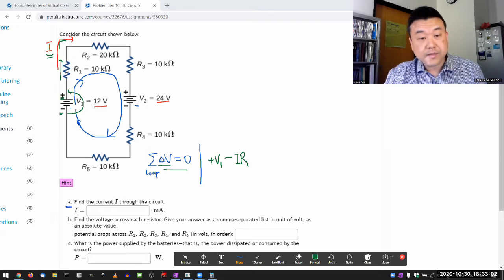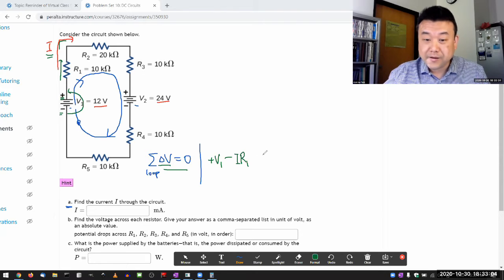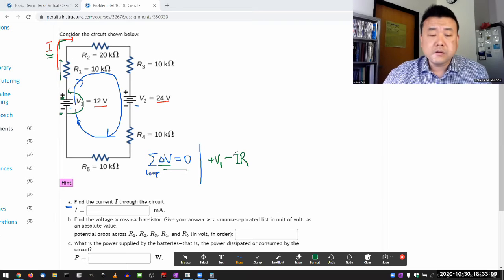So the only thing that matters here is the consistency. So I'm going with the current in the direction I labeled. And in the end, when I find the current to be negative, then the negative sign in current will cancel out this minus sign. So everything will work out. The thing to be careful here is to be consistent.